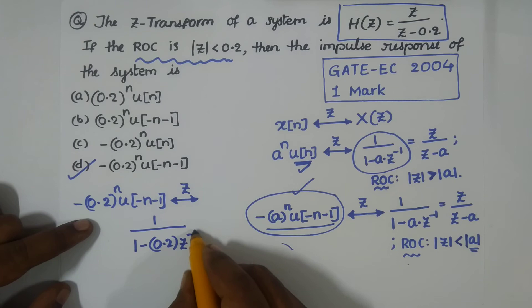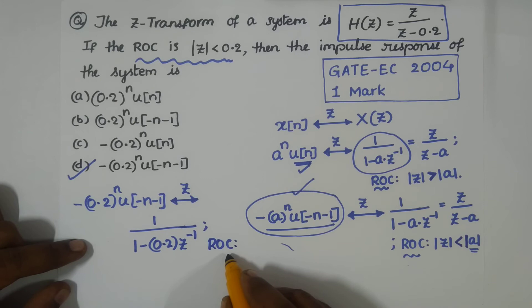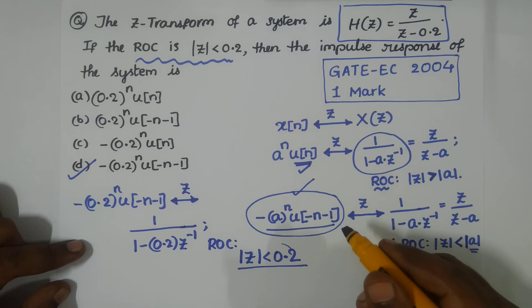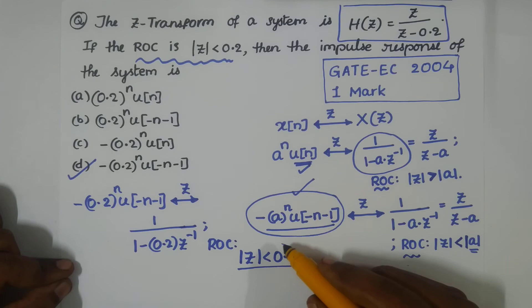What is the region of convergence? The region of convergence is |z| < 0.2, where |0.2| is 0.2. Hence, option D is the correct option.